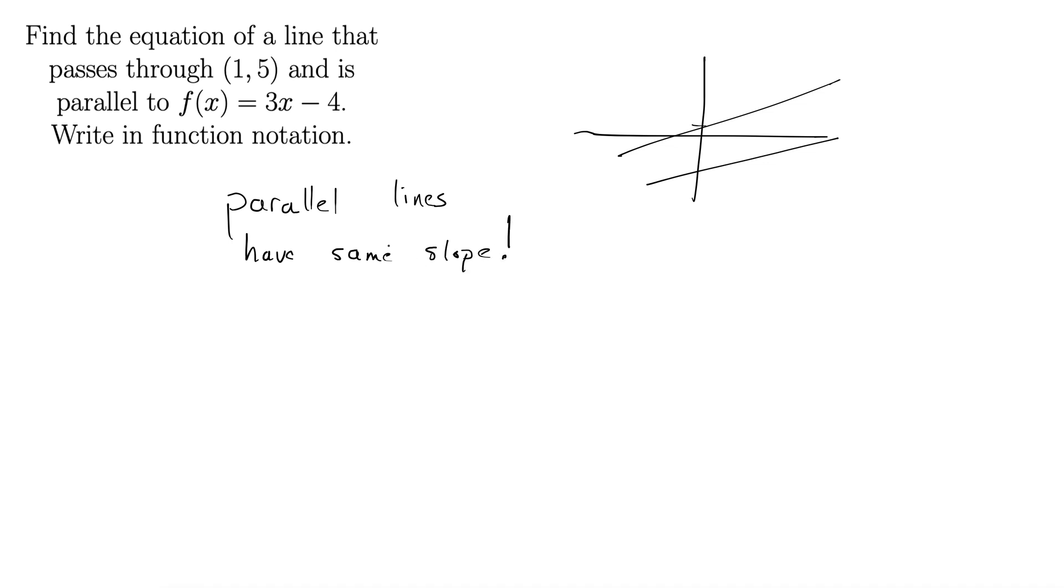So we just need to grab the slope from this line that they give us. They write it in this fancy f(x) notation but really it's just y = 3x - 4. But this equation is in slope-intercept form, y = mx + b form. So we can tell that our slope is 3.